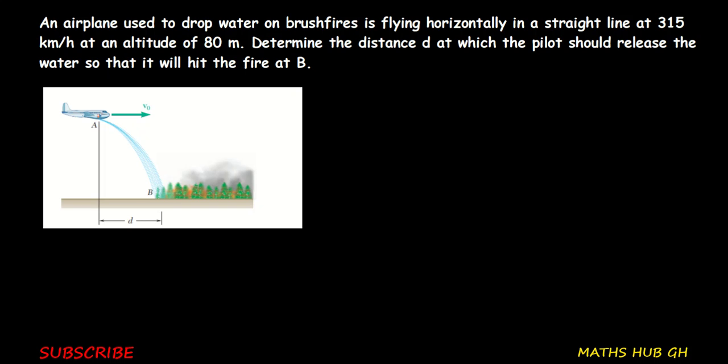The question says: an airplane used to drop water on bushfires is flying horizontally in a straight line at 315 km per hour at an altitude of 80 meters. Determine the distance d at which the pilot should release the water so that it will hit the fire at point b.